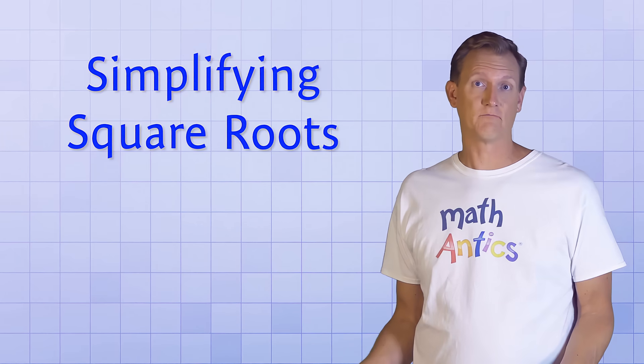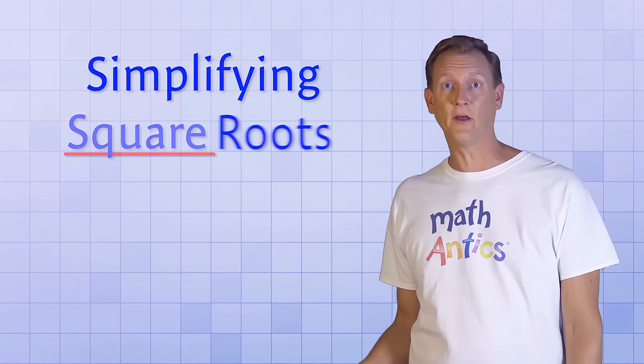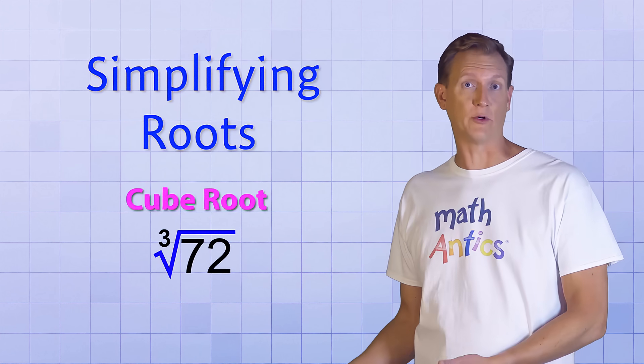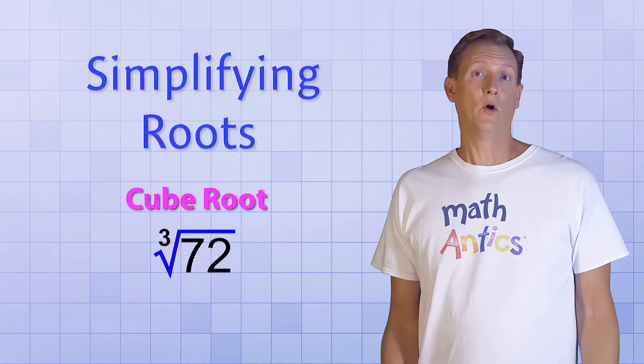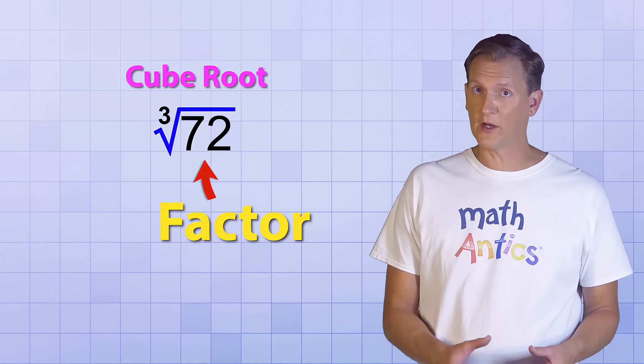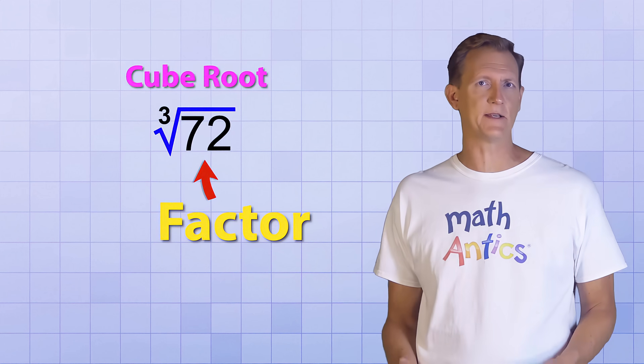So that's basically all there is to simplifying square roots. And even though square roots are the most common, sometimes you may need to simplify other roots too. For example, what if you need to simplify the cube root of 72 instead? Well, you'd start the process the same way. You'd factor the number under the root sign down to its prime factors to see if any parts of it can be simplified.